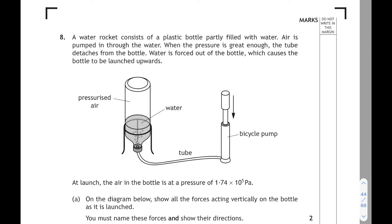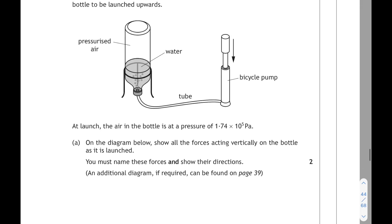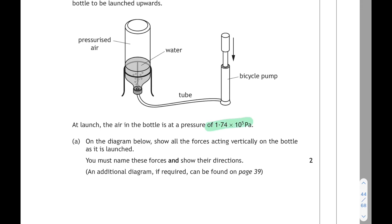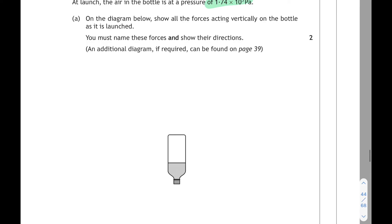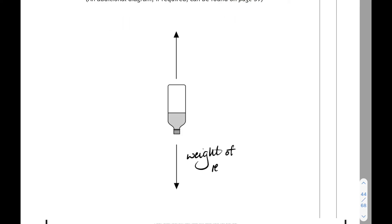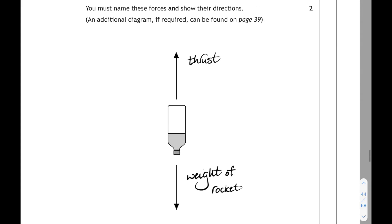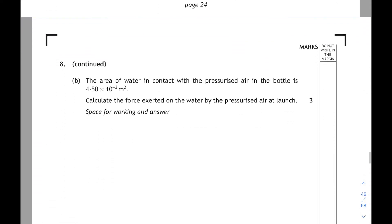Question 8. We're on to properties of matter here. A water rocket consists of a plastic bottle partly filled with water. Then air is pumped in through the water. And when the pressure is great enough, the tube detaches from the bottle. And water is forced out the bottle, which causes the bottle to be launched upwards. And at launch, the air in the bottle is at a pressure of 1.74 times 10 to the 5 pascals. And on the diagram below, we have to show all the forces acting vertically on the bottle as it's launched. Well, I've put two arrows on there. And the downwards force will be the weight of the rocket. And upwards we have the thrust. One mark for each of those names and the arrows.